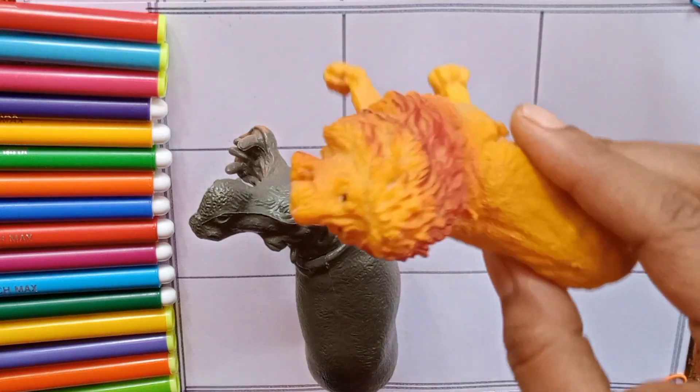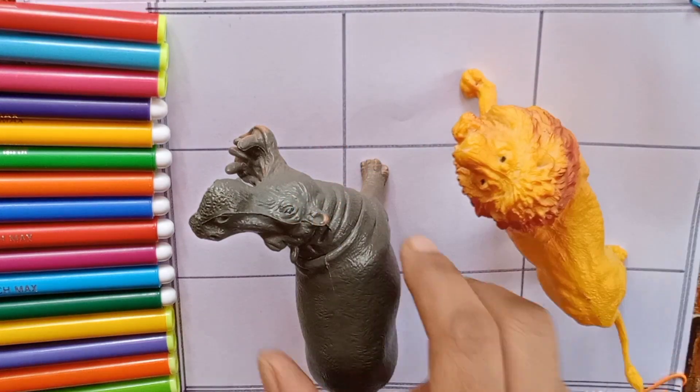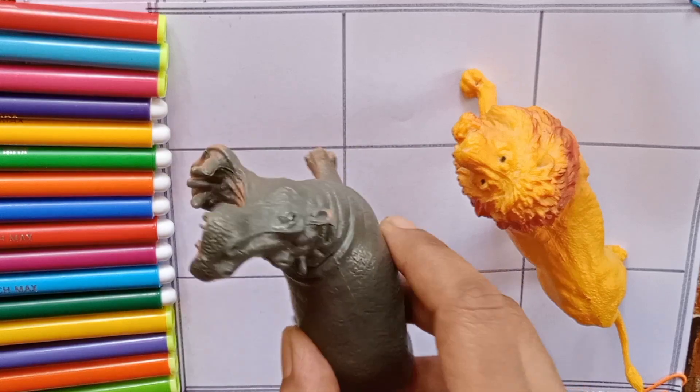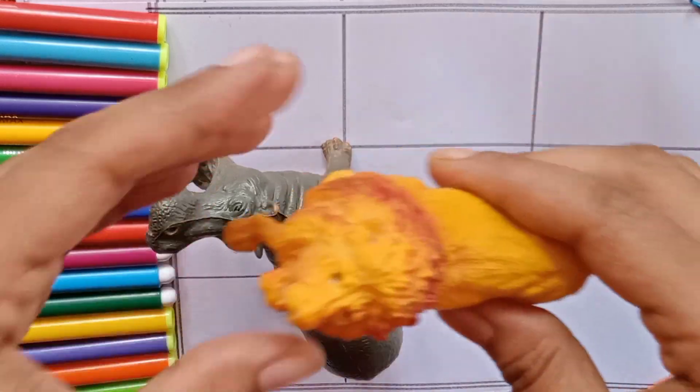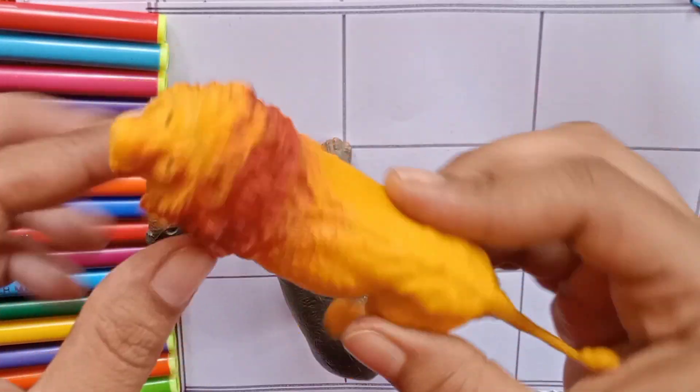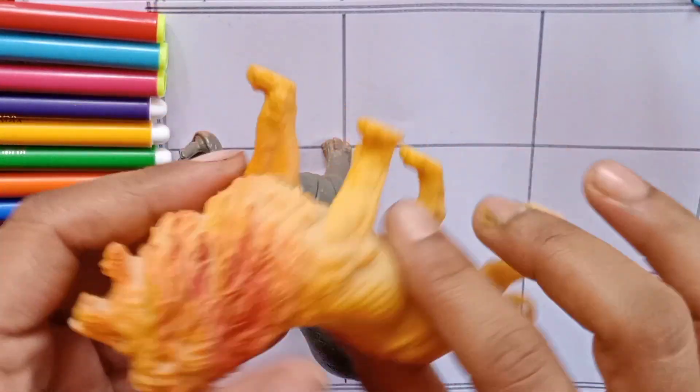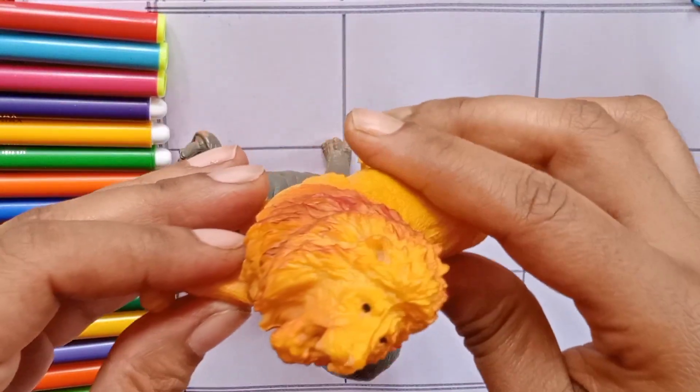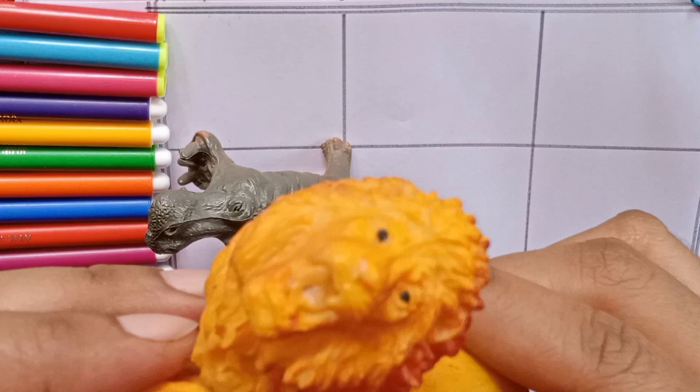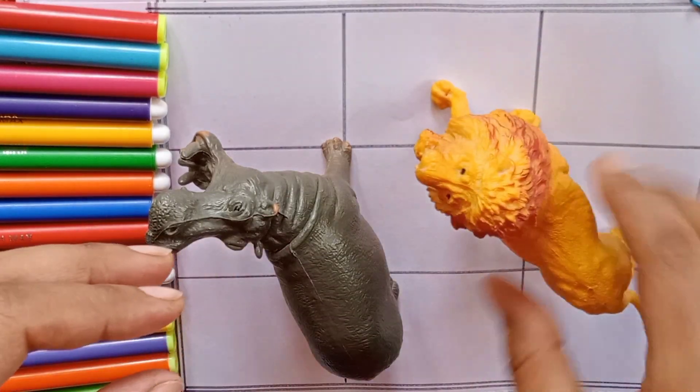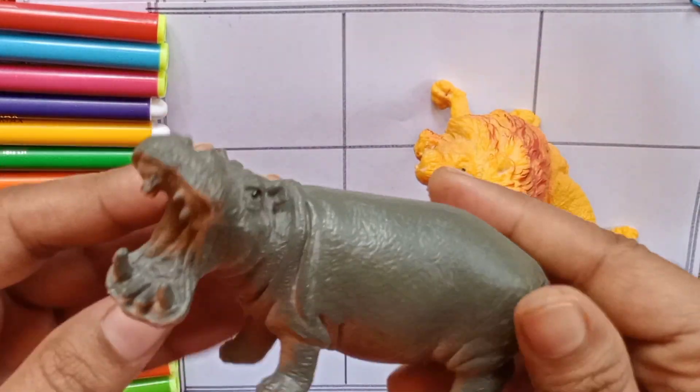Oh wow, animals! Lion. This is a hippopotamus. Lion is the king of the forest. Hippo is a calm animal.